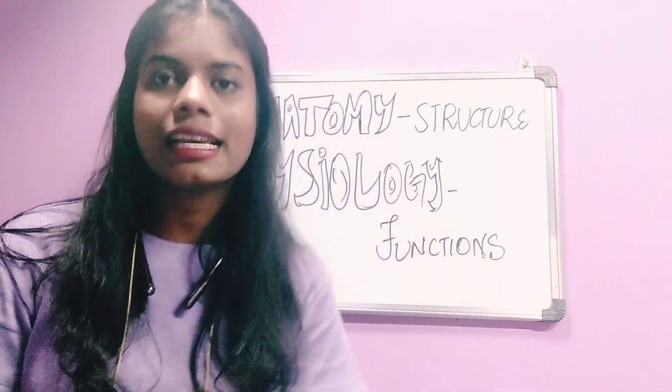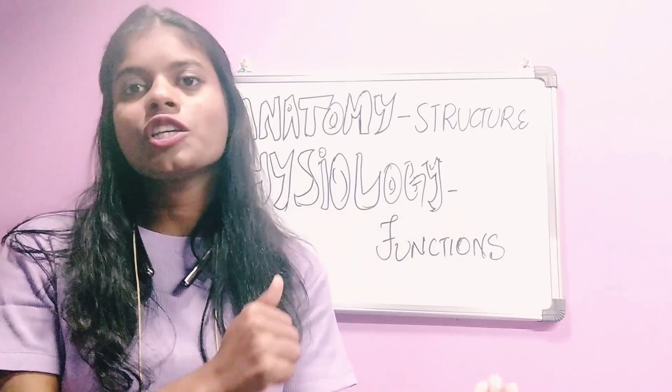Next is physiology — spelled P-H-Y-S-I-O-L-O-G-Y. Physiology and anatomy are paired subjects. Anatomy is about structure — you can feel it. Physiology is about function. I hope you are clear about anatomy and physiology.